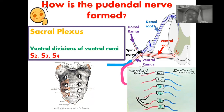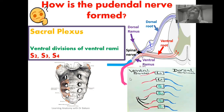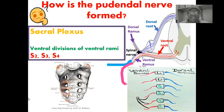We have the ventral divisions of the ventral rami from S2, S3, and S4 sacral spinal nerves. This is how we have the emergence of the pudendal nerve. The ventral rami further subdivide into anterior and posterior divisions, and it is the anterior or ventral divisions of the ventral rami of S2, S3, and S4 that come together to form the pudendal nerve.